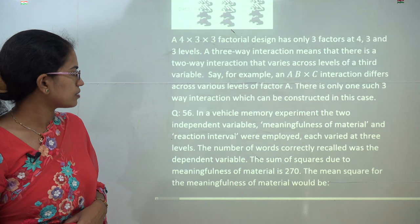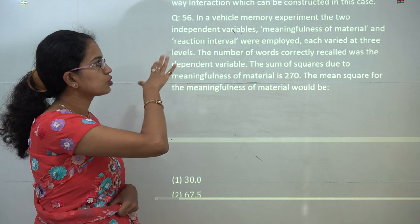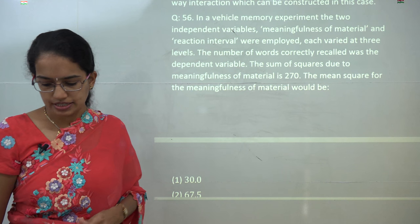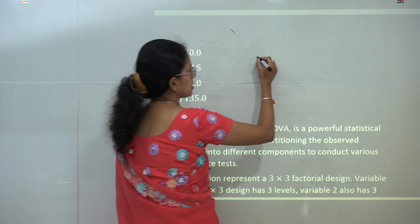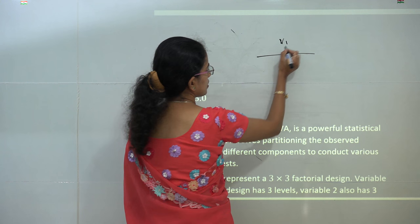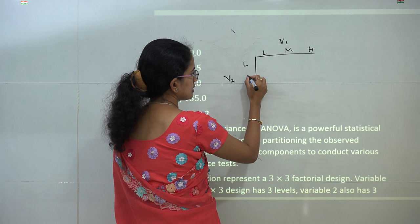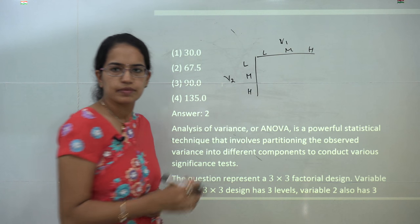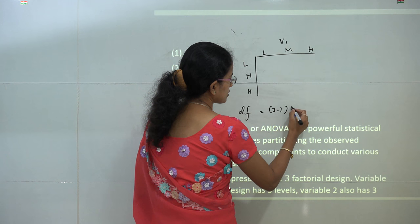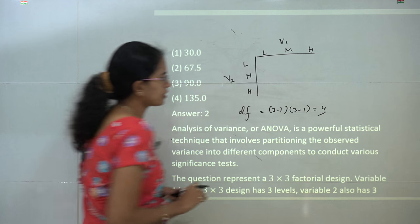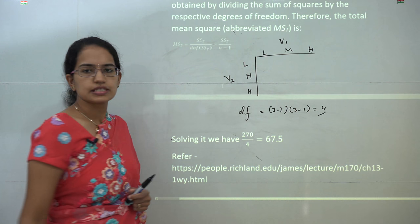Now the next question talks about the degree of freedom. There are two variables and each of these are varied at three levels. So what does this mean? This means I have variable 1 varied at three levels—low, medium, and high—and again variable 2 which is varied at three levels—low, medium, and high. So it would be a 3 by 3 matrix. Now what would be the degree of freedom? In this case, the degree of freedom would be 3-1 times 3-1, that comes to 4. And you have the sum of the squares as 270, so it would be 270 by 4. So the answer would be 67.5.